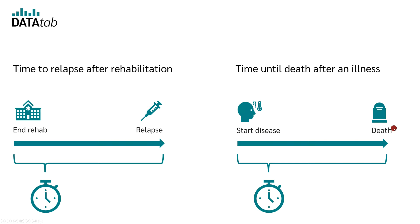You might be interested in whether different types of treatments have an impact on the time until a relapse occurs. Or, as the name survival time analysis suggests, the classic example is the time until death after a disease. Here, the start time is the recognition of the disease and the end time is death. In many cases, it is of great interest whether a certain drug has an influence on the survival time or not.